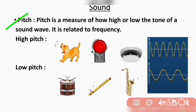First, we have pitch. Pitch is a measure of how high or low the tone of a sound wave is. It is related to frequency — frequency determines the shrillness or flatness of a sound. High frequency means high pitch, meaning the sound is shrill. Similarly, lower frequency gives lower pitch, meaning the sound is flat.